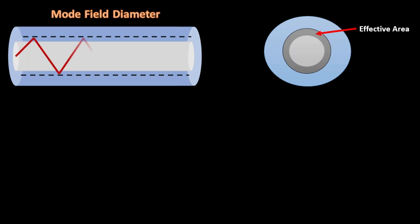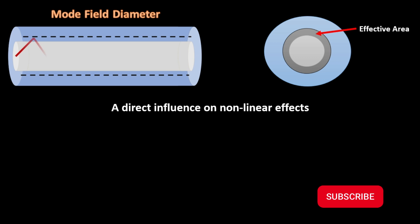The mode field diameter, or effective area, is an important feature of fiber and has a direct influence on non-linear effects. Non-linear effects are those which directly depend on the power density of the light injected into the fiber.